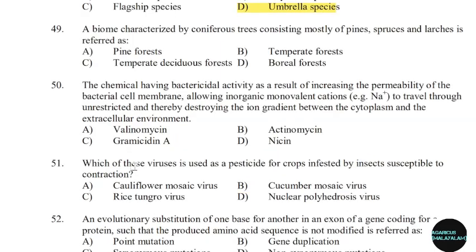49th question: A biome characterized by coniferous trees consisting mostly of pines, spruces, and larches is referred to as. Correct answer: Option D — Boreal forest.